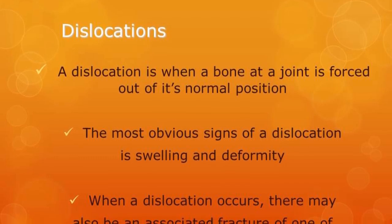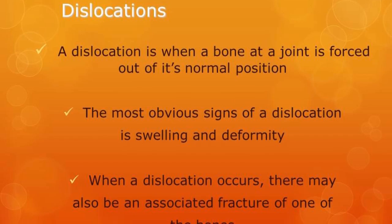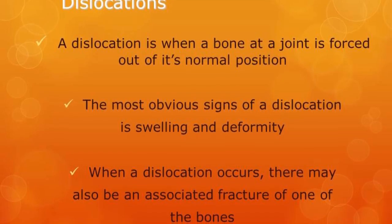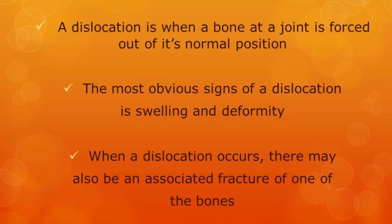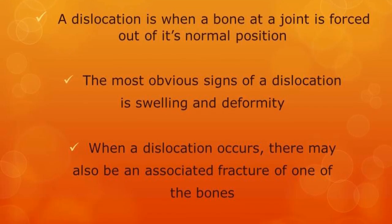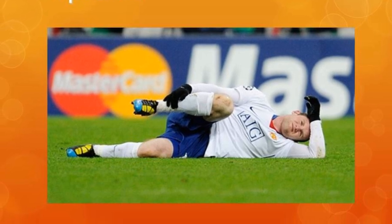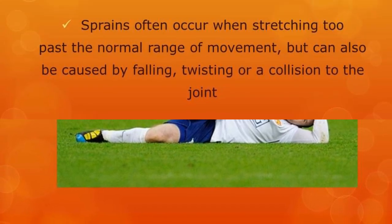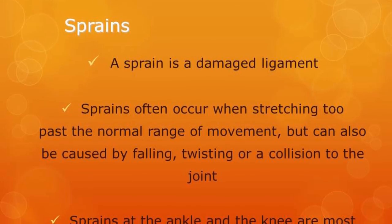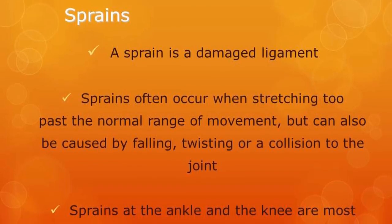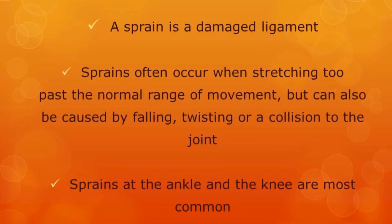A dislocation causes one of the bones to be displaced. The most obvious sign is the deformity and swelling of the joint when it's locked in position. A sprain is a damaged ligament. The most common sprain in sport is a twisted ankle, which happens a lot in invasion games. It occurs when a joint is stretched too far past its normal range of movement, and can also be caused by falling, twisting, or a collision.